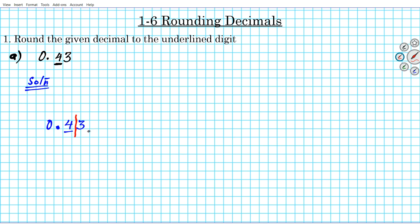They don't necessarily have to go away depending on their position in the number. If it's to the left of the decimal point, the zero stays, and if it's to the right, then it goes away. So identify the place value — we have it underlined. You draw a partition. Now take a look at the number to the right of the digit you're rounding to. In this case, the digit to the right is 3. The rule is: 0 to 4, no more; 5 and up, round up.